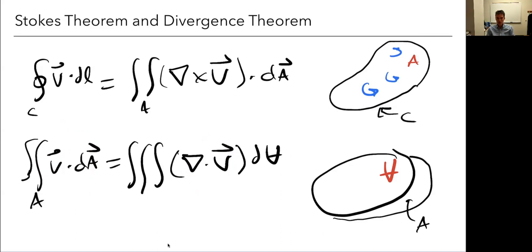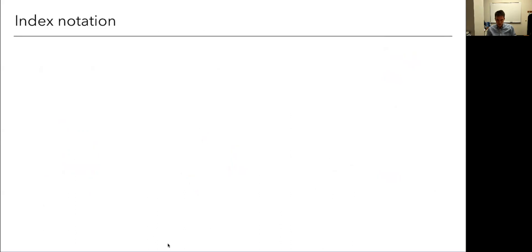So these are both useful quantities because they're going to be able to tell us things about the interior of a domain without having to integrate across this huge region, just by looking at these boundary properties. Let's talk a little bit about index notation.